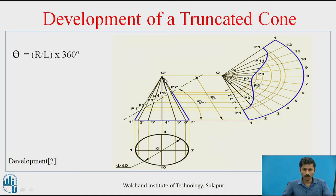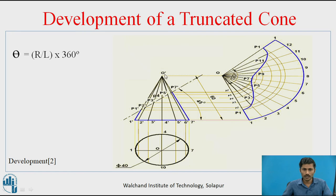To transfer these points, use a compass from the apex point O. Measure the distance from apex O to each intersection point — for example O to P1 — with the compass and transfer that distance onto the corresponding generator on the development plane. We get point P1 on both O1 generators. Similarly, point number 2 transferred on O1 gives P2, point number 3 transferred on O3 gives P3, and so on for all 12 points.